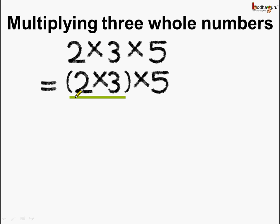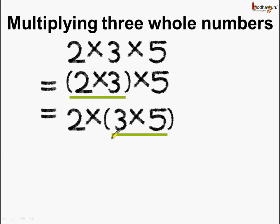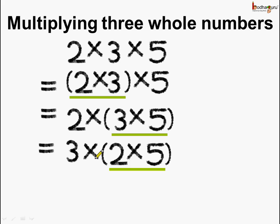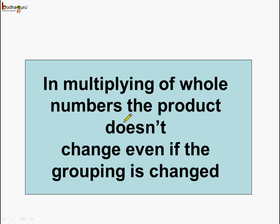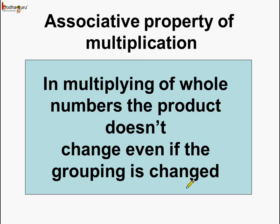Here we grouped 2 and 3 first: (2 × 3) × 5. Another way was we grouped 3 and 5 first: 2 × (3 × 5). And another way was we grouped 2 and 5: 3 × (2 × 5). In all the cases the answer is the same, which is 30. So in multiplying whole numbers, the product doesn't change even if the grouping is changed. This is called the associative property of multiplication. When we are multiplying 3 or more numbers, even if we change the grouping, the product is always the same.